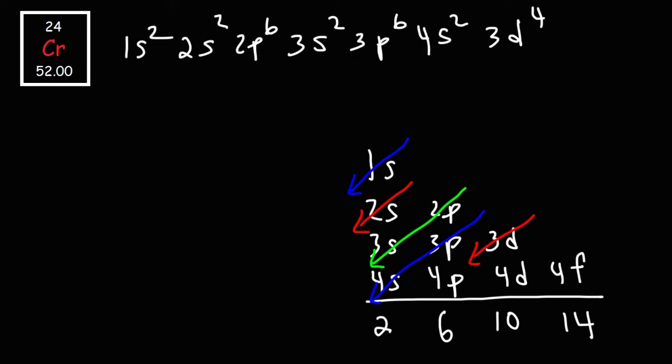Now we're not quite finished. Let's draw the 4S orbital diagram and also the 3D orbital diagram. Each orbital can hold up to two electrons, so we have two electrons in the 4S level and four electrons in the 3D sublevel.